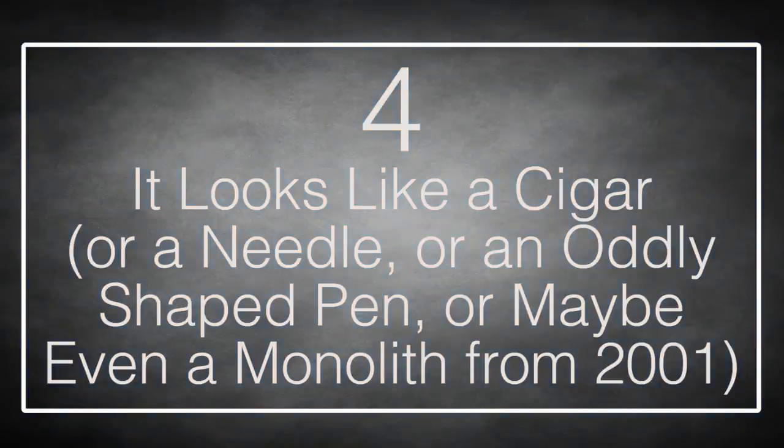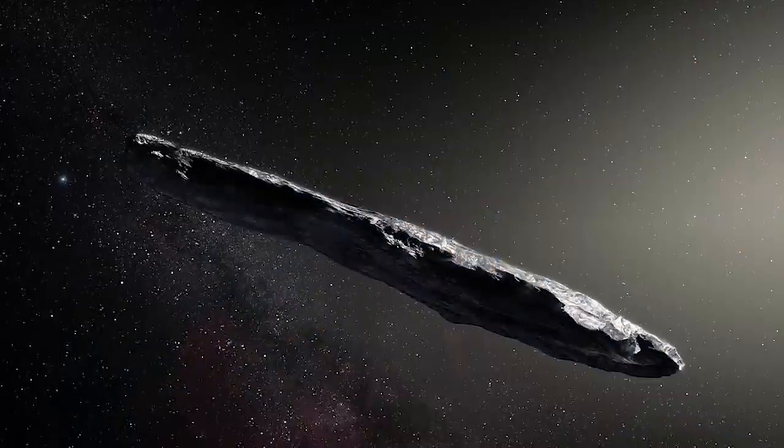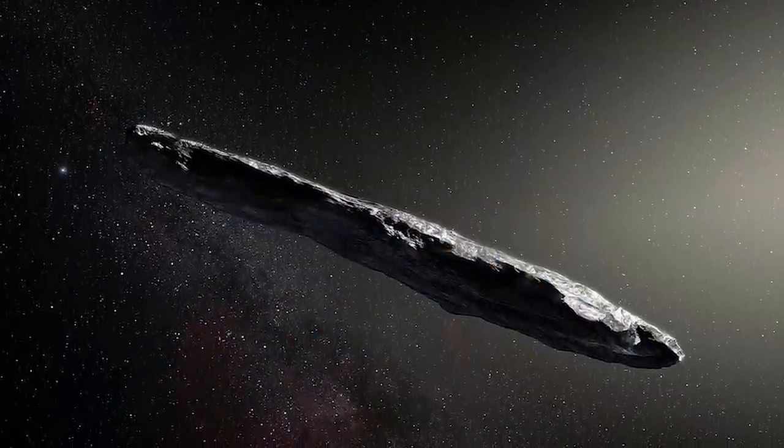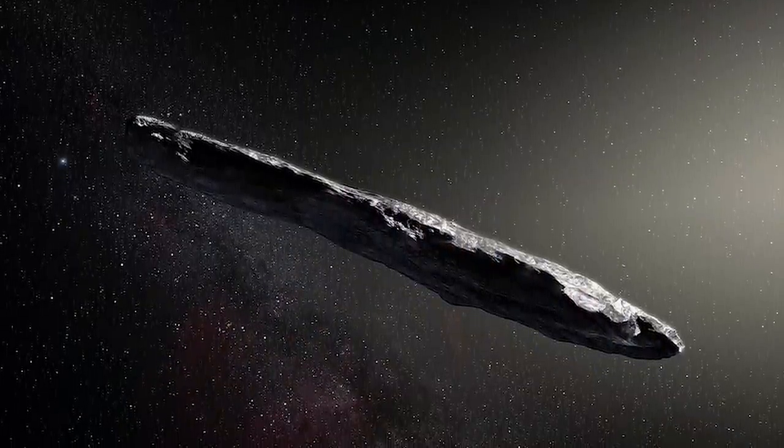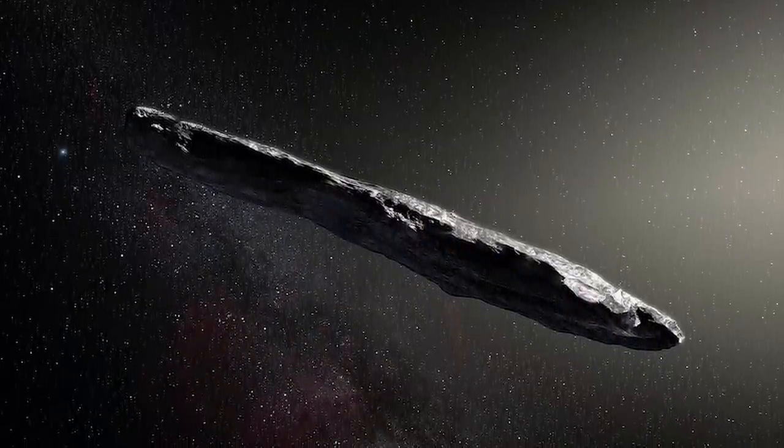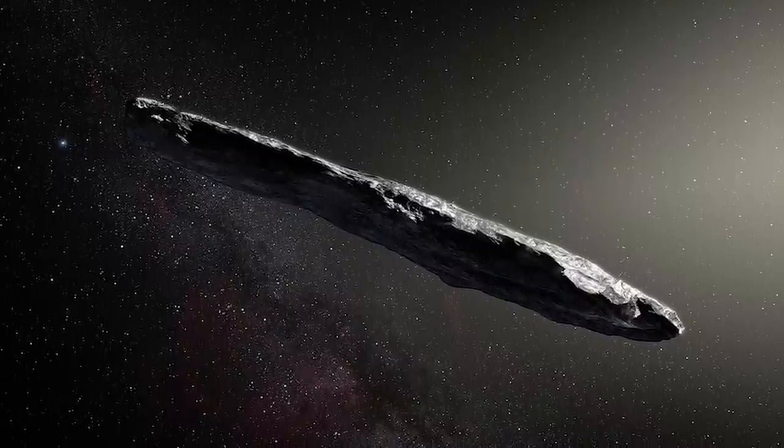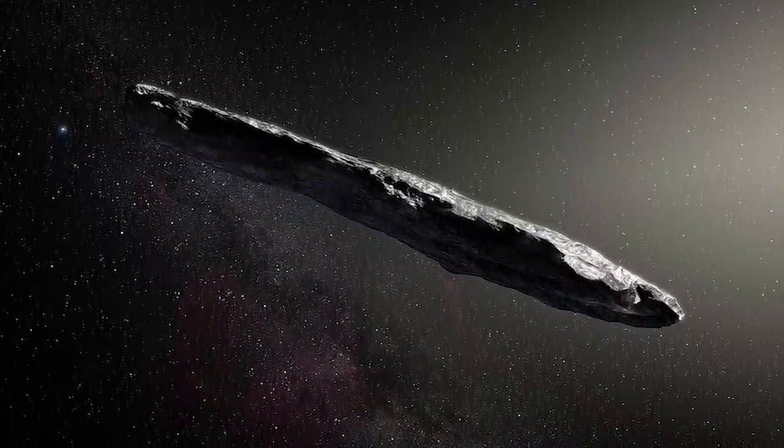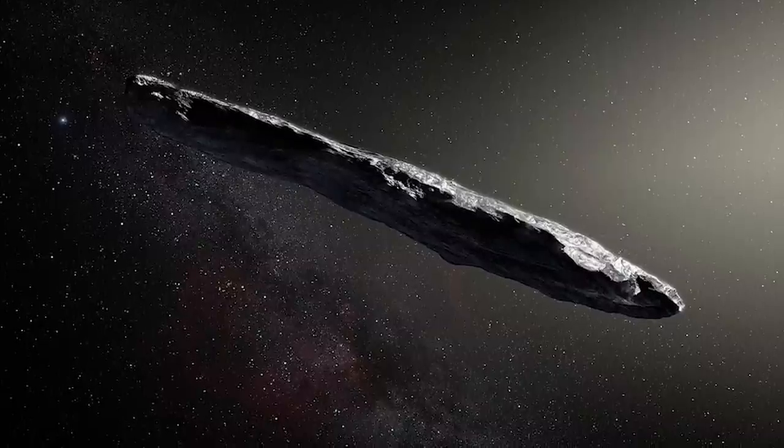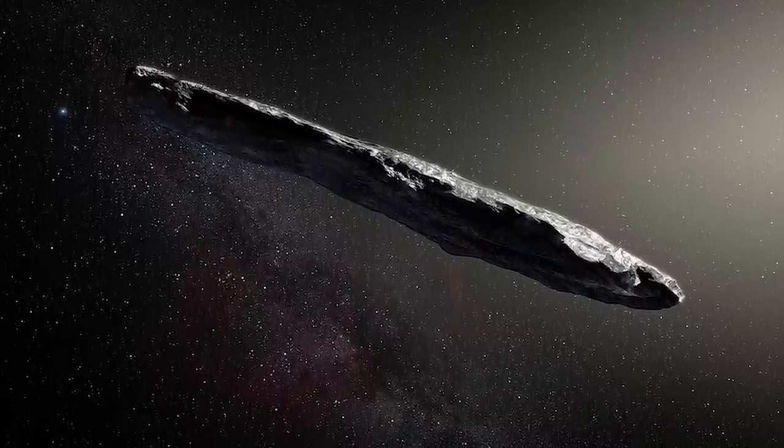Number 4. It Looks Like a Cigar, or a Needle, or an Oddly Shaped Pen, or maybe even a Monolith from 2001. Widely circulated images, like the one we're showing here, are of course artists' impressions. Nobody has seen Oumuamua up close, so the question arises, how do we know what it looks like? The truth is, we don't. Not exactly. All we know is that it's around ten times as long as it is wide, and if we base this on observations of light as the object spins on its axis once every 7.3 hours or so,